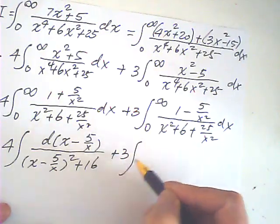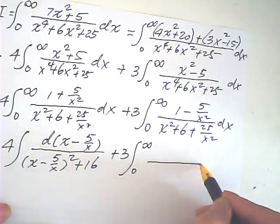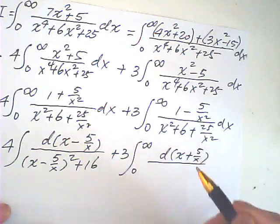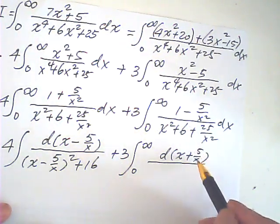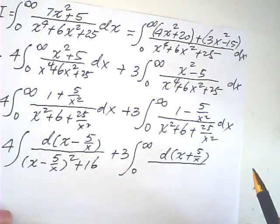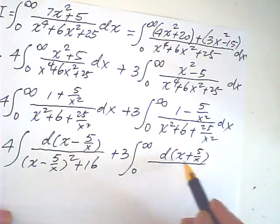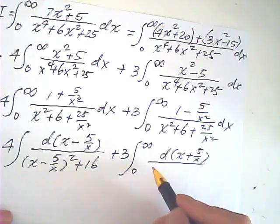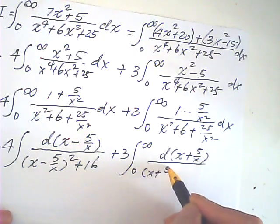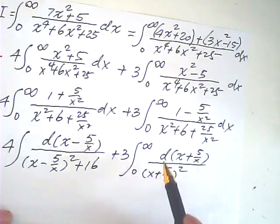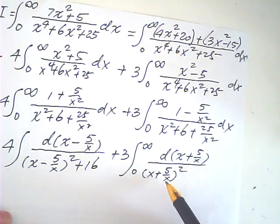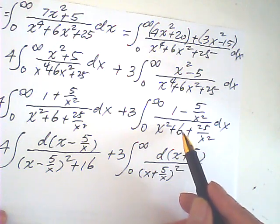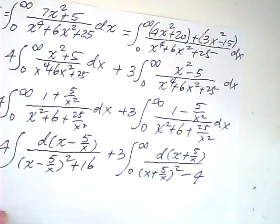Similarly, I do this for the second integral. So, this one is d of x plus 5 over x. This derivative is 1 plus 5 over x squared, negative. And I try to rewrite the denominator as x plus 5 over x as a variable, which is possible. x plus 5 over x squared, the midterm is 10. I have 6, so I take 4 away to make the equal sign.